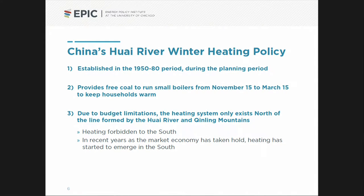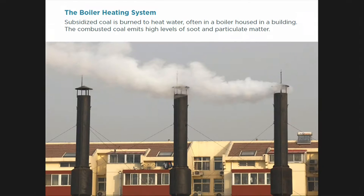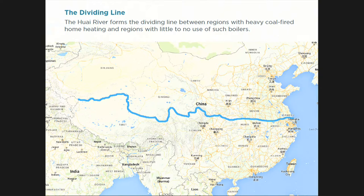This policy was established in the planning period. Not only did it give free heat to the north of the line, heat was actually forbidden to the south — although as the market economy has taken hold, heating has started to emerge in the south. Here's an example of the boilers they installed — small boilers installed throughout the cities, not super-efficient. The key thing is: if you were to the north, you got free winter heating with coal; to the south, it was forbidden.